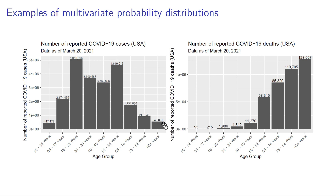Even though 85 plus years didn't really make up a huge share of the cases for COVID-19, when we introduce another variable — the third variable — which is deaths due to COVID-19 reported in the USA, 85 plus individuals had a really high rate of death even though they didn't make up a huge share of the reported cases.